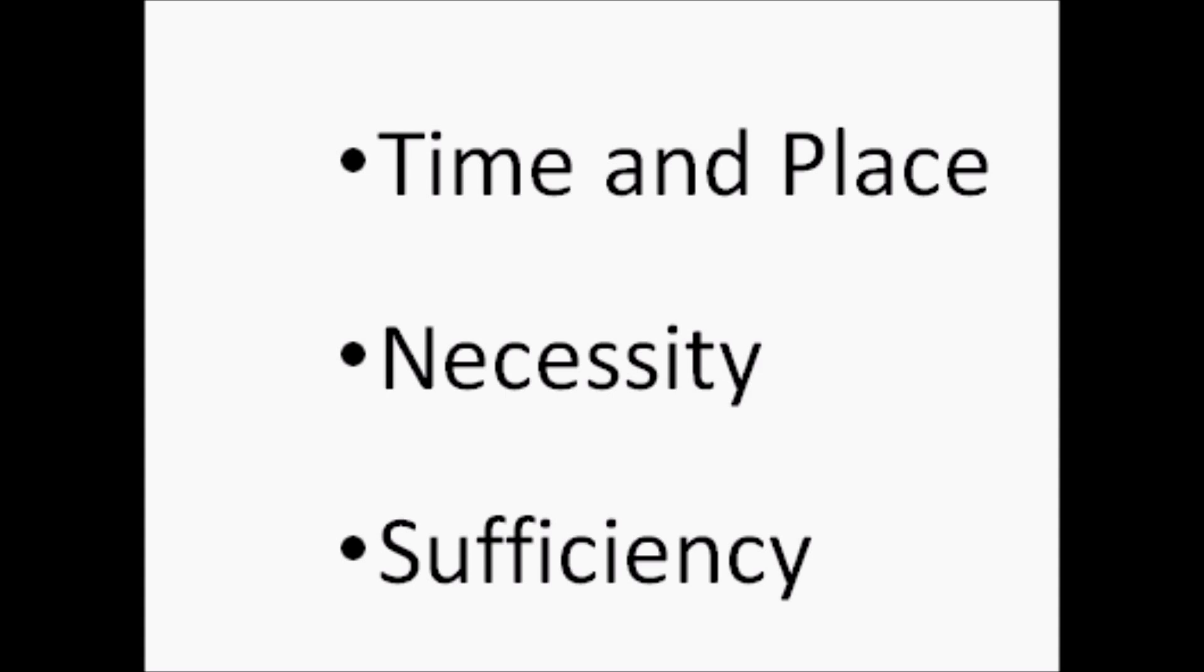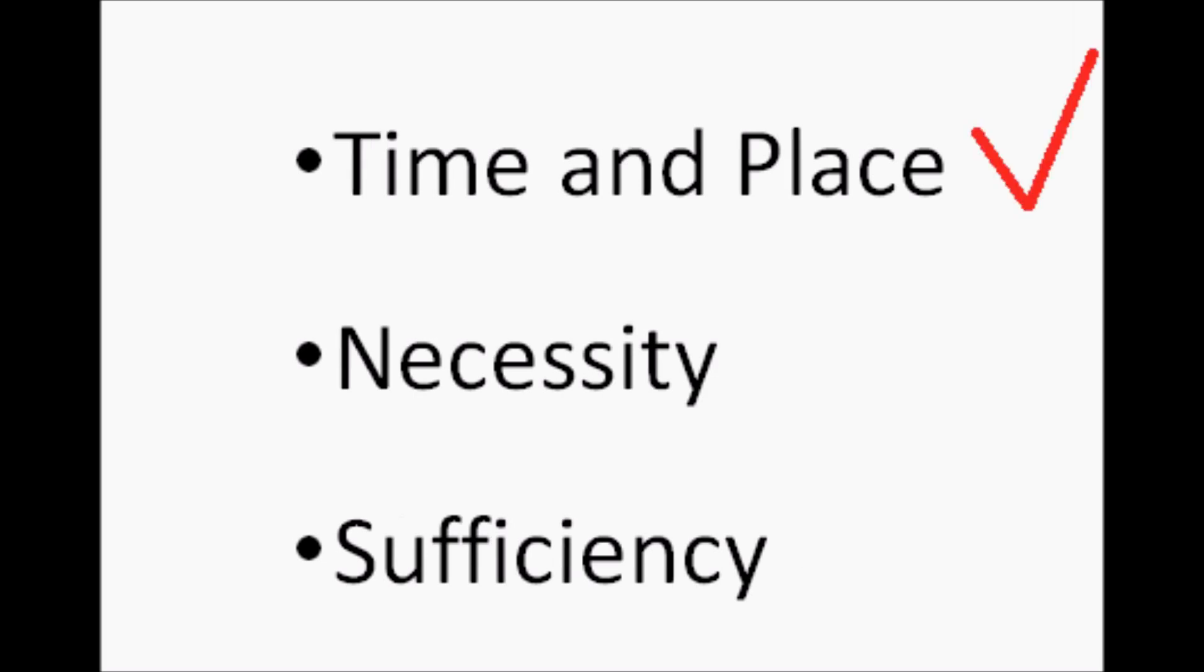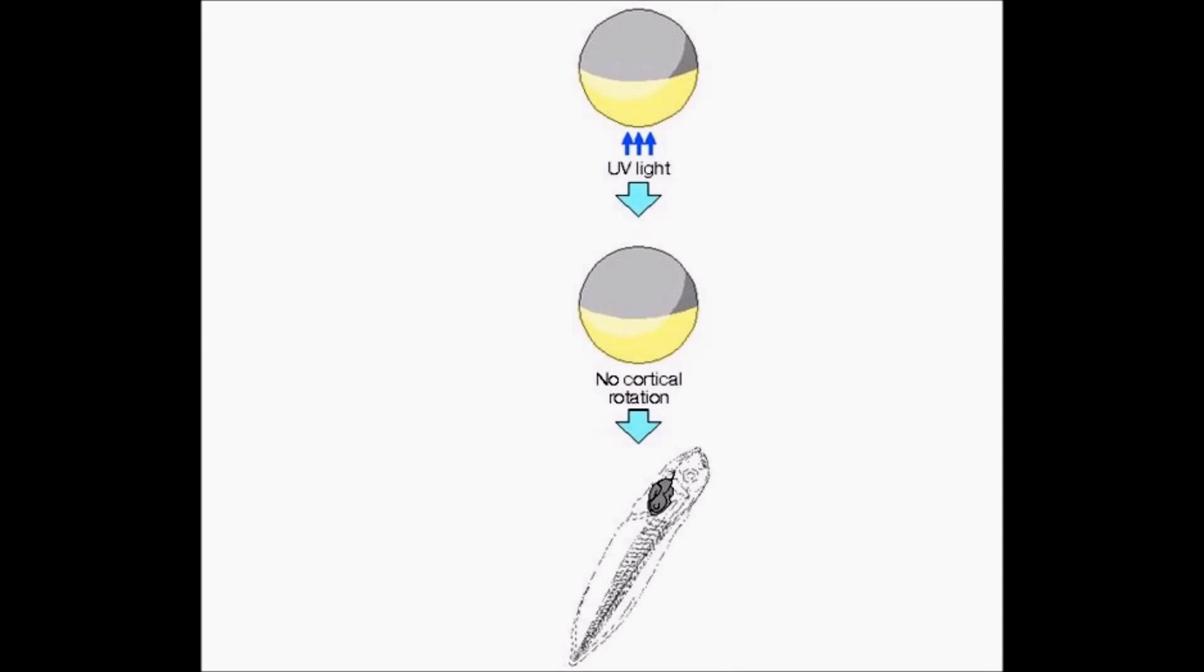Performing a rotation at another stage in development other than around the first cleavage will not result in proper dorsalization. This shows time and place of cortical rotation. To show necessity, UV light can be shined at the vegetal pole of the embryo. Microtubules will not polymerize and the egg will stay stationary. The resulting embryo will be ventralized and will lack dorsal structure.